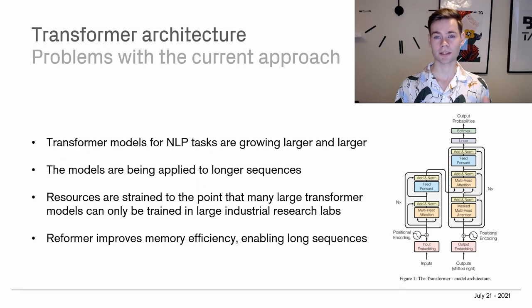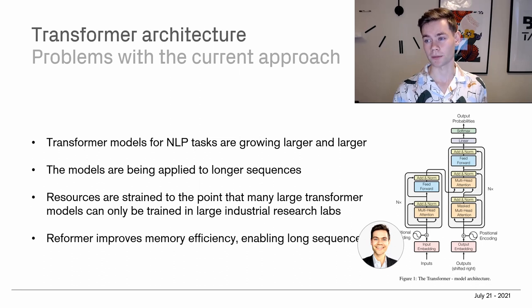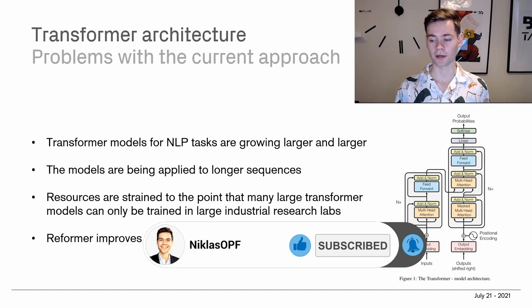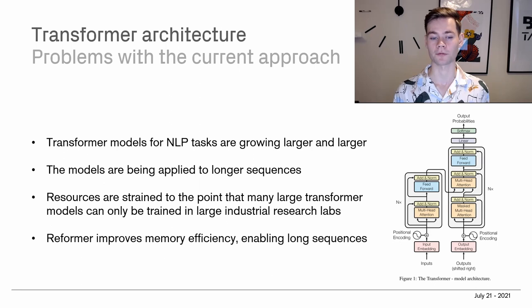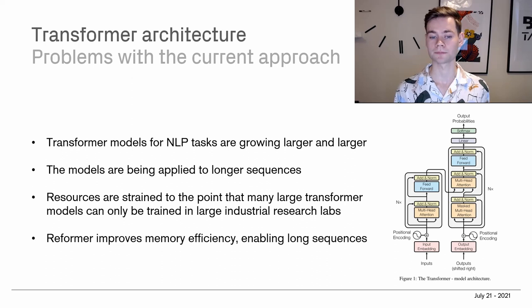This doesn't make for an even playing field. If all the relevant research comes out of, say, Google, that's a problem — you're not really having as many people working on the problems as you could if you had something more efficient. So this is what the Reformer aims to address. It improves memory efficiency, enabling longer sequences to be taken into account by these models.